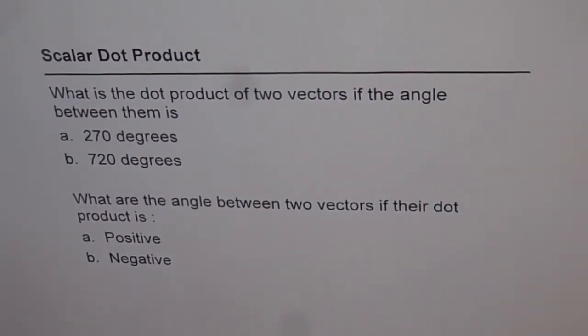Scalar dot product. What is the dot product of two vectors if the angle between them is 270 degrees and part b is 720 degrees?